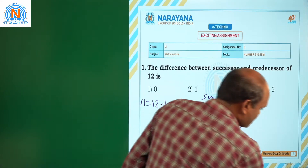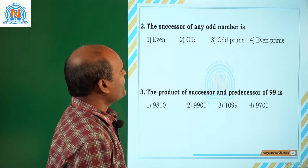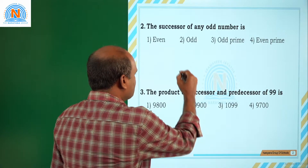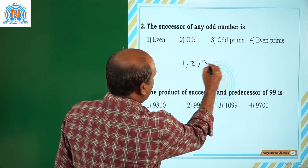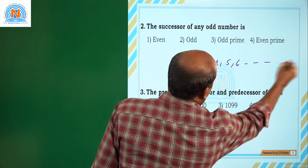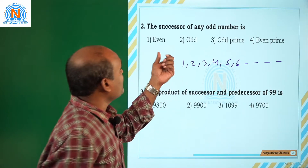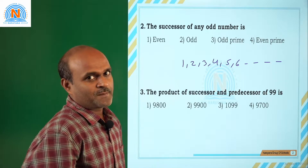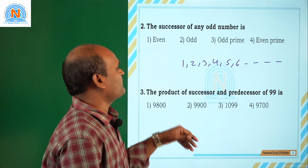Coming to the next question: the successor of any odd number is. We know natural numbers — generally 1, 2, 3, 4, 5, 6 and so on. He is asking the successor of any odd number. Successor means next, coming to the next number, that is plus 1.